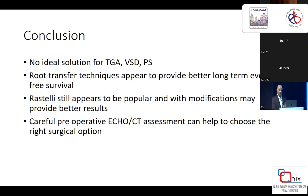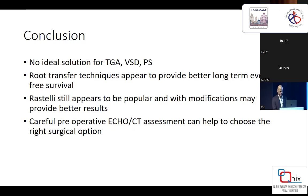To conclude: there is no ideal solution even now with all these techniques available. Each has its own limitations, and we do not have enough data because all these are very small case series where statistics are difficult to apply. Root transfer techniques at the moment appear to have better outcomes compared to traditional Rastelli or REV. Rastelli and REV with modifications may produce better results than those published in 2000, but preoperative assessment — whether echo or CT — remains the key.